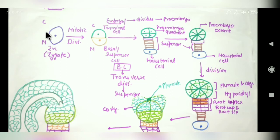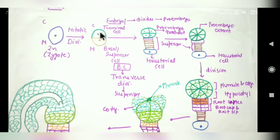Looking at the diagram: the zygote is represented, and 'm' represents the micropyle of the zygote. There is a mitotic division — a transverse mitotic division. The outer cell will be the embryonal cell or terminal cell, and the basal cell will be the suspensor cell.